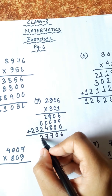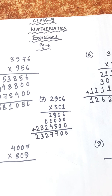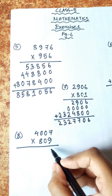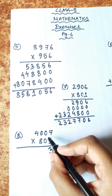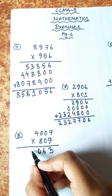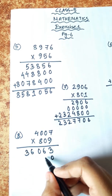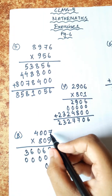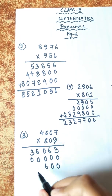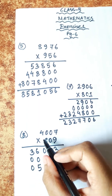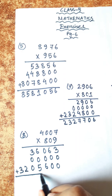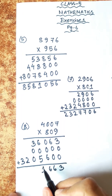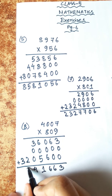Problem Number 8: 4007 × 809. Steps: 7 9s are 63, carry 6. 9000 plus 6 is 6. Result: 90049036. Then: 7000, 0000, 0000, 40000. Next: 780056, carry 5. 80000, 0000.